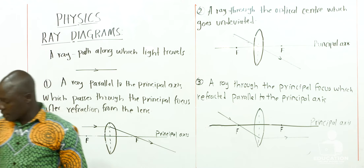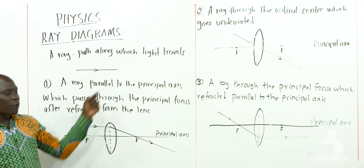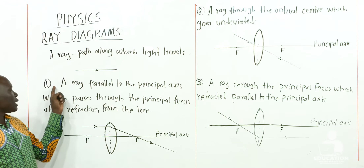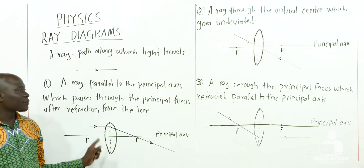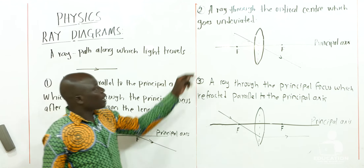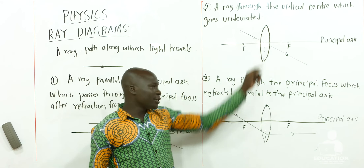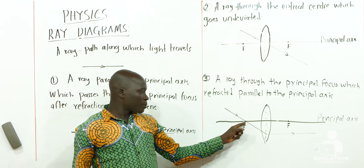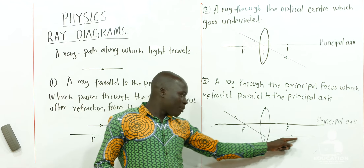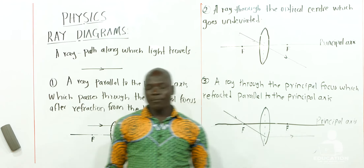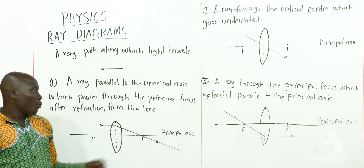In locating the position of an image, we shall always use two of the following rays: a ray parallel to the principal axis which passes through the principal focus after refraction; a ray through the optical center which goes undeviated; or a ray through the principal focus which is refracted parallel to the principal axis. We can use any two of them.